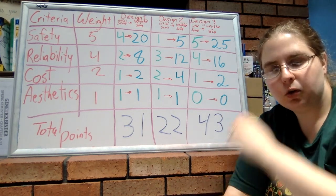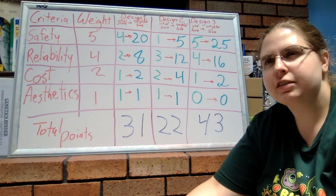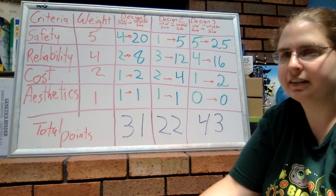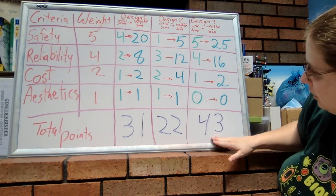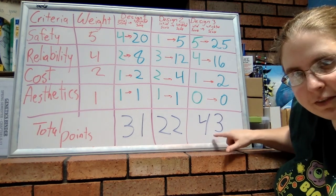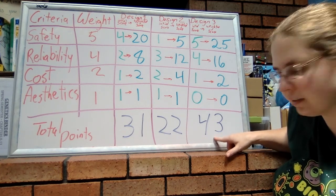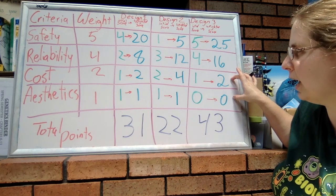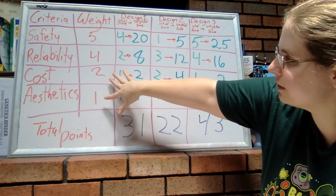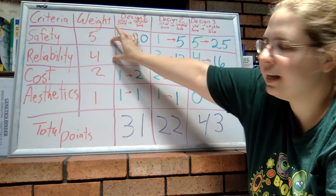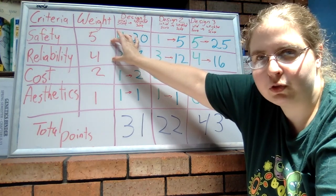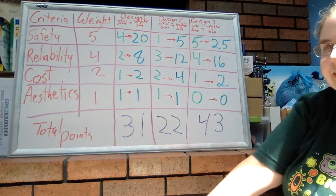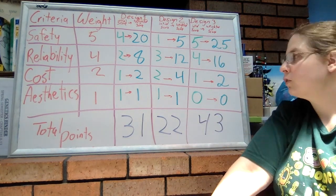So design three has the highest value, the highest total points of 43. Even though it scored low in these bottom two categories—the cost and aesthetics—it scored high in things that mean the most to us, which is why they have the highest value of weight and why it's reflected in the weighted score.